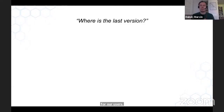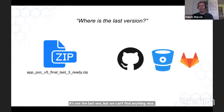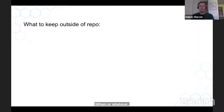First of all, we need to get the code base. Peter sent the team his application in a zip file, which is a problem because it's not the last version and we can't find anything else. Peter should have used version control tools — some repository. It might depend on the tool used in the organization: GitHub, Bitbucket, GitLab, whatever. But it should follow version control so we can easily share code and see all versions and history of changes.